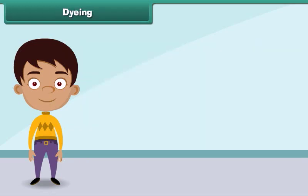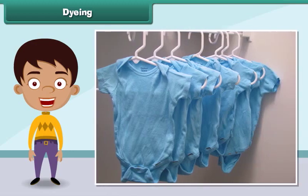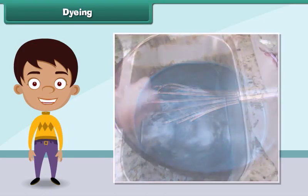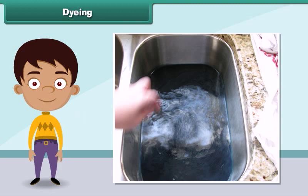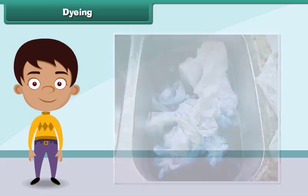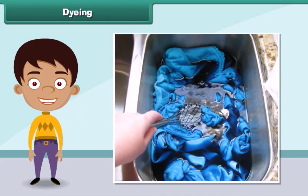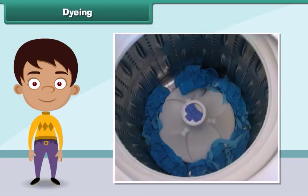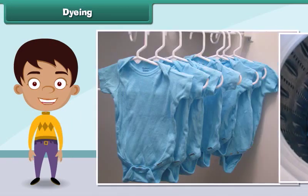Dyeing a fabric means giving a new color to it. To dye a fabric, first a solution of dye and salt in warm water is prepared. Next, the fabric is dipped in the solution. Then the fabric is removed from the solution after an hour and washed. Finally, the fabric is dried.